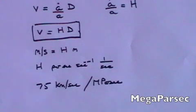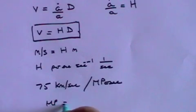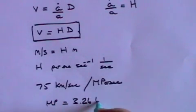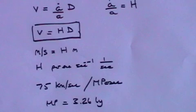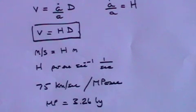It is currently thought to be of the order of 75 kilometers per second per megaparsec. A megaparsec is an astronomical unit. It is approximately 3.26 light-years.